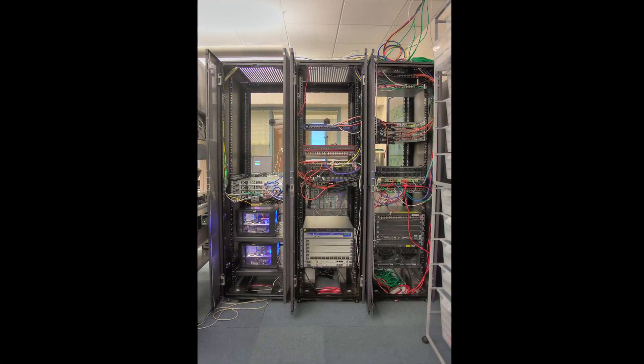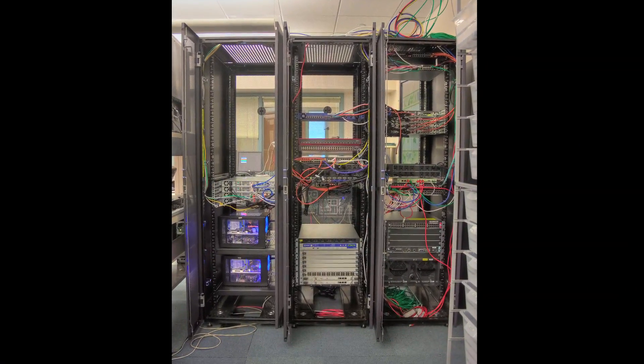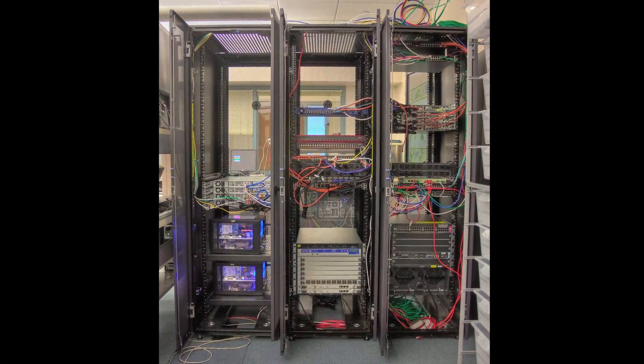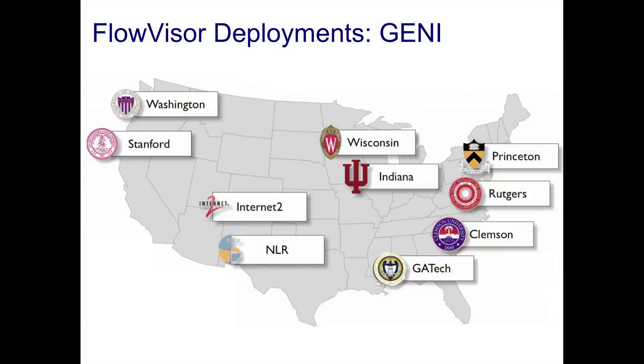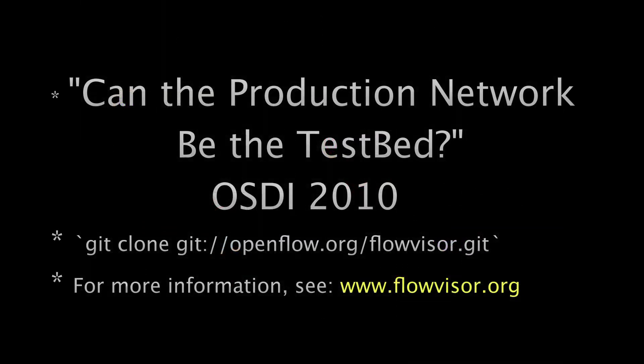Not just a good idea on paper, we actually deploy FlowVisor on real equipment on our own production network. In addition to Stanford, FlowVisor is deployed on seven college campuses and in two backbone networks. If you would like to learn more about FlowVisor, please check out our OSDI 2010 paper, 'Can the Production Network be the Testbed?', the FlowVisor website, or just download the code from our code repository. Thank you.